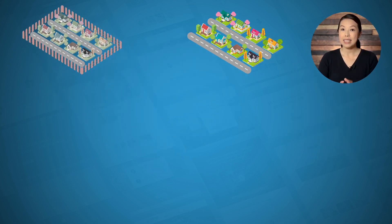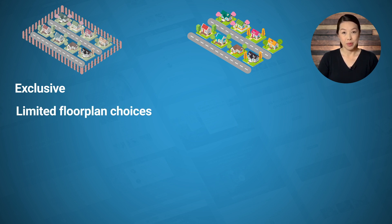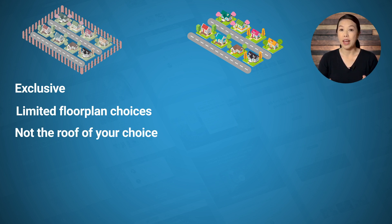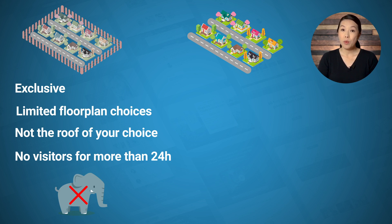You can either build in a gated community with a homeowners association, or a non-gated community without one. Gated communities in the United States tend to be known as slightly exclusive communities, but with many limitations. If you were to build a brand new house in a gated community, your floor plan choices would probably be very limited. You might not be able to install the type of roof you want because all houses in the community are supposed to have the same kind of roof. You may not even be able to have visitors over for more than 24 hours, or be permitted to have certain types of pets. And of course, there would be a homeowners association keeping an eye on everything — lots of restrictions on what you can or can't do.